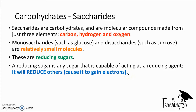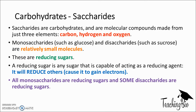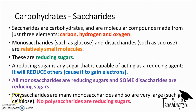Remember from GCSE chemistry: OIL RIG - oxidation is loss of electrons, reduction is gain of electrons. So the reducing sugar will cause another compound to gain electrons and therefore reduce it. All monosaccharides are reducing sugars and some disaccharides are reducing sugars. Polysaccharides are many monosaccharides joined together and they are quite large, but no polysaccharides are reducing sugars.